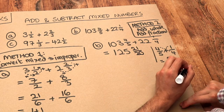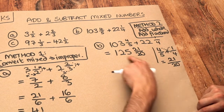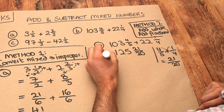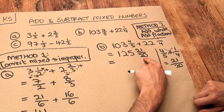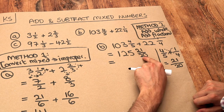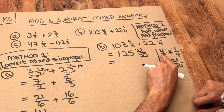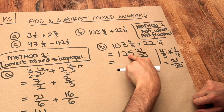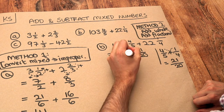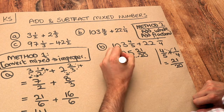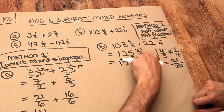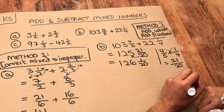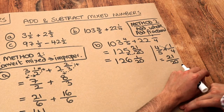Now the problem, which you might have spotted, is that you can't have a mixed number involving an improper fraction. We've got 21 twentieths, which is one and a twentieth. So that one we carry onto the 125, giving us an extra one — so it's 126. And we still just have that one twentieth left, so the answer is 126 and one twentieth.